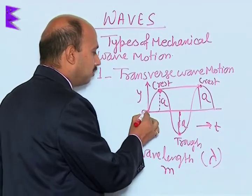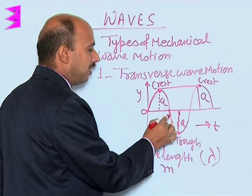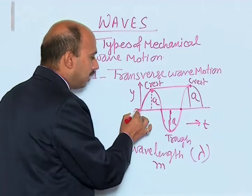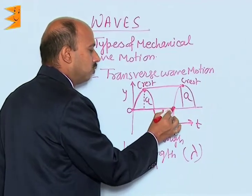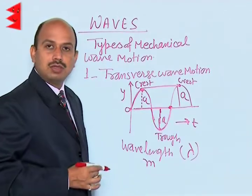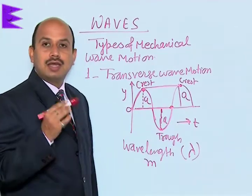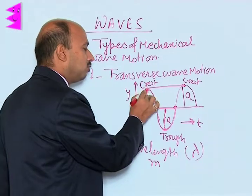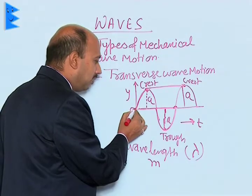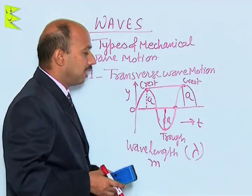Starting from one point, a half wave forms and then completes on the other side — the time taken by the wave to travel one complete wavelength is known as the time period. Particles at two crest points are in the same phase; similarly, particles at two trough points are in the same phase. However, a particle at the origin O and a particle at the trough are out of phase, with a phase difference of π radians.